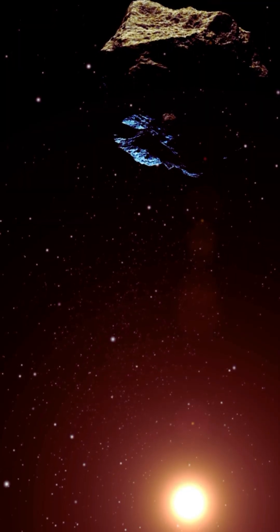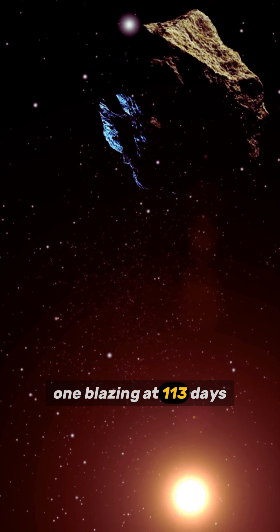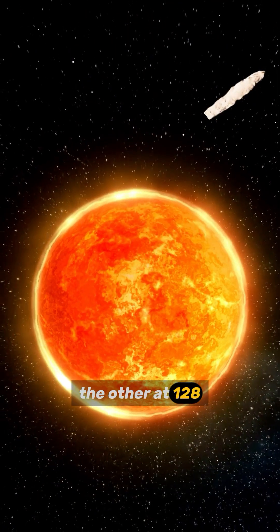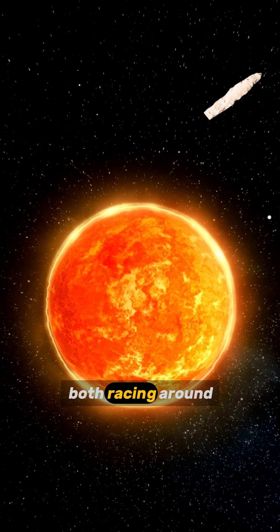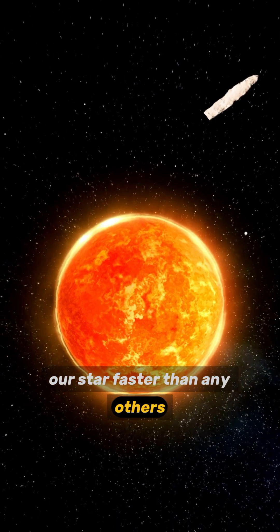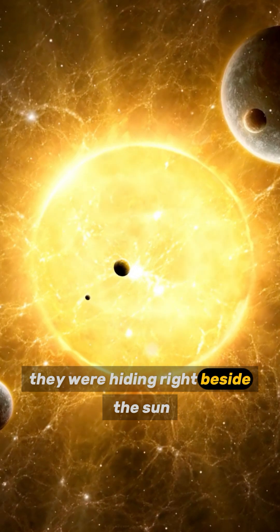Two asteroids. One blazing at 113 days, the other at 128. Both racing around our star faster than any others we know. And they were hiding right beside the sun.